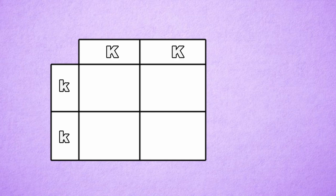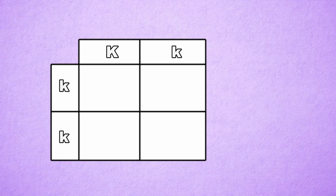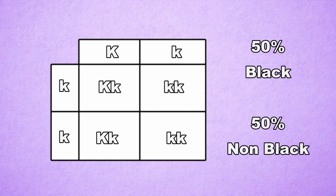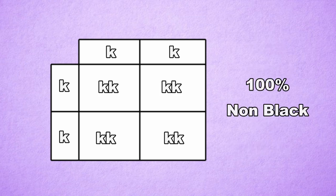If a homozygous Big K dog mated with a homozygous Little K dog, their entire litter would be heterozygous Big K and be all black. If a heterozygous Big K dog mated with a homozygous Little K dog, half of their puppies would be heterozygous black and half would be homozygous non-black. And if two homozygous Little K dogs mated, all of their puppies would be homozygous Little K.